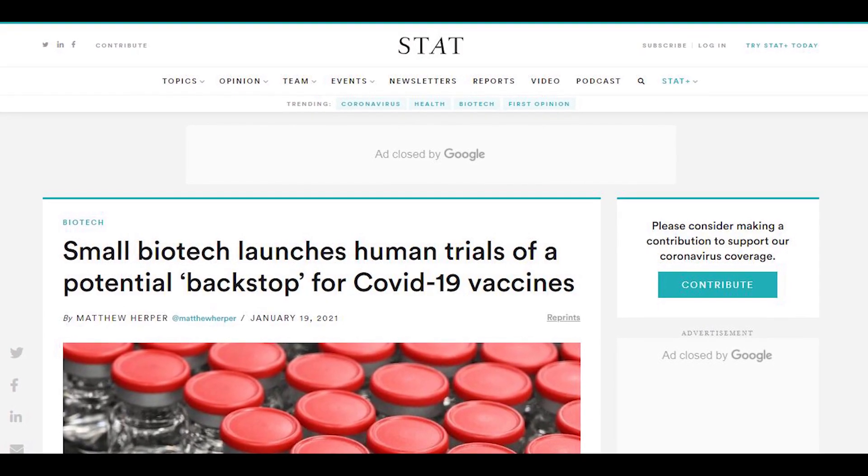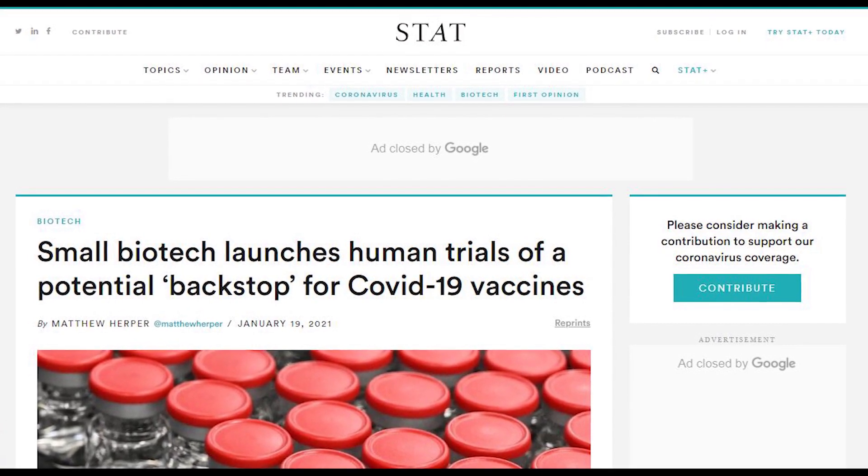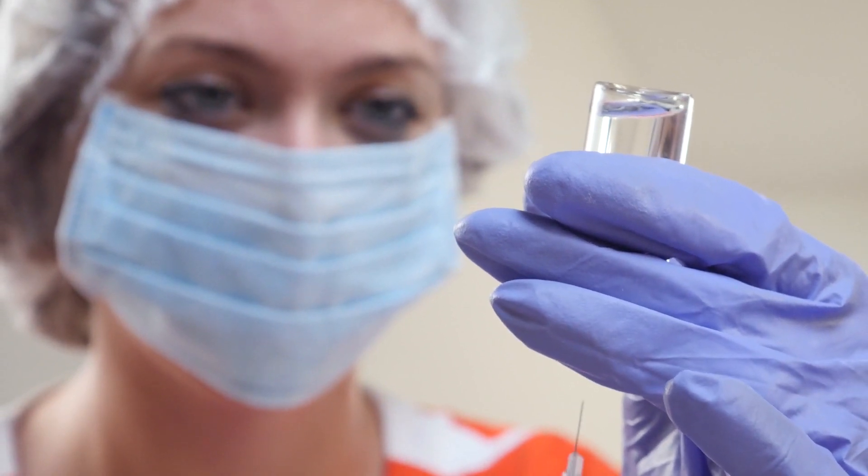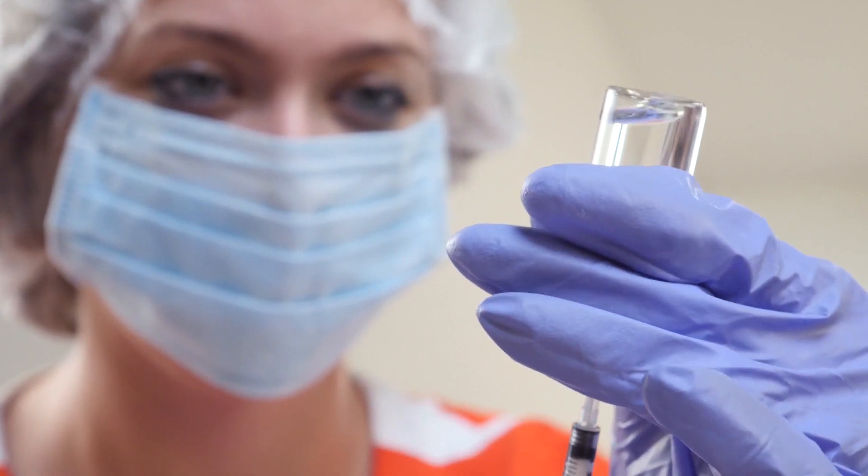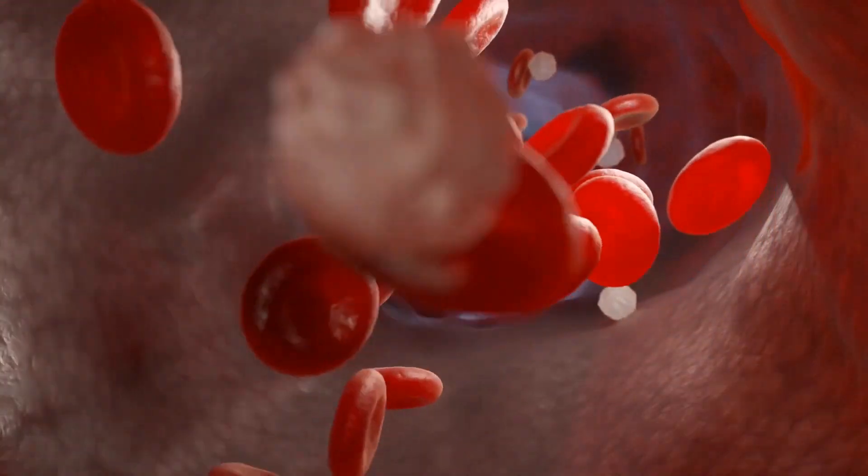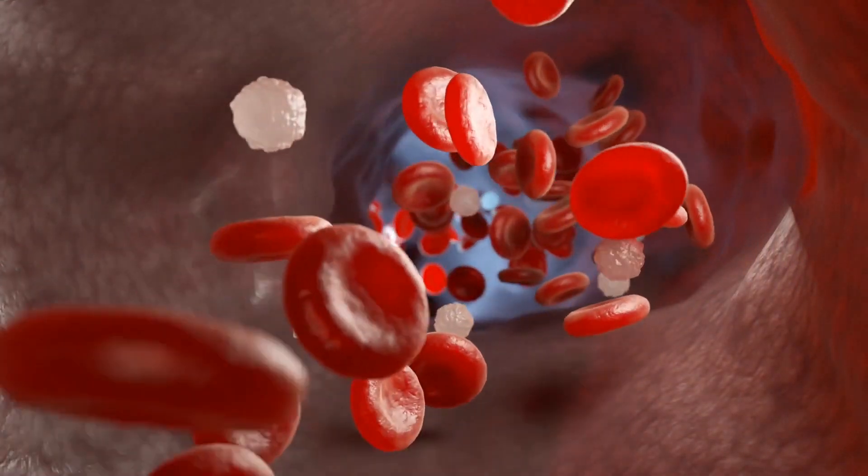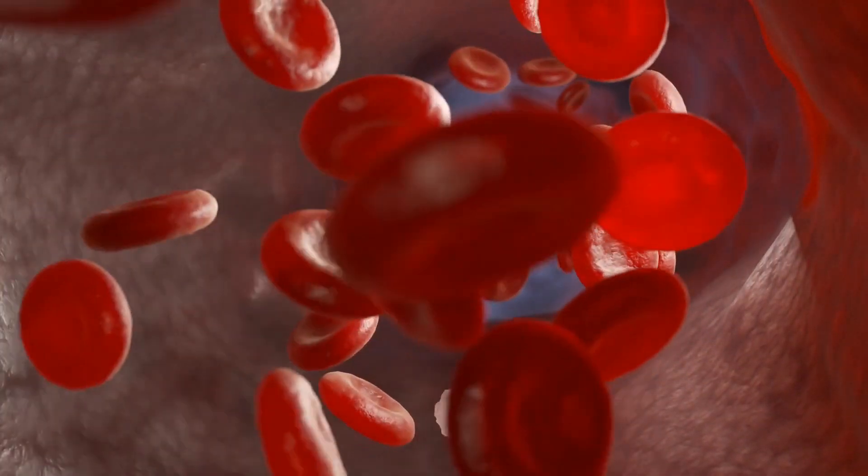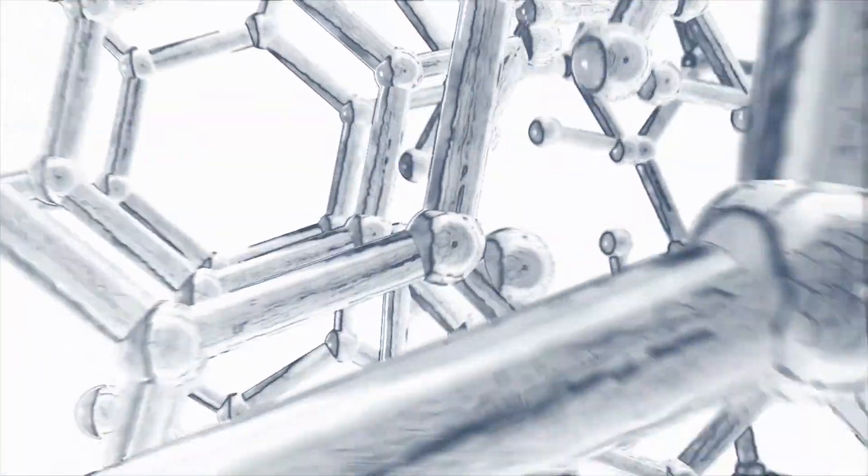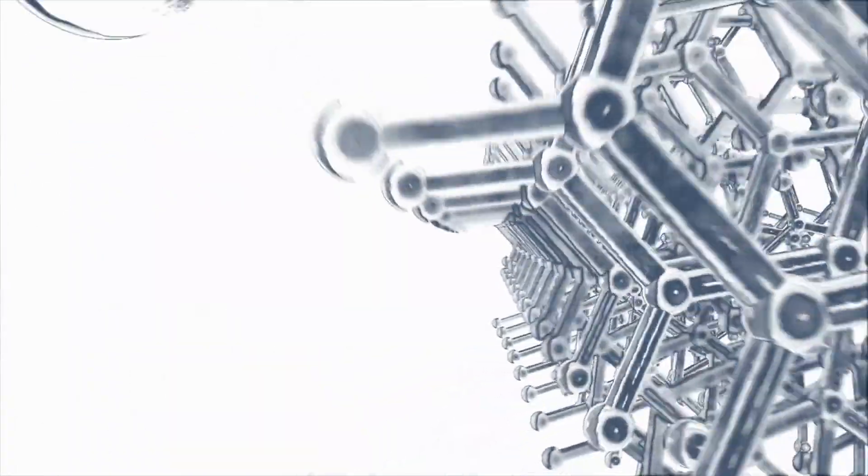According to STAT, Gristone's method combines two distinct vaccine types. The first uses vector-based technology via an adenovirus strain, like the J&J COVID-19 vaccine. The adenovirus delivers a gene into human cells, which will later produce proteins the immune system can detect and analyze. The second type uses mRNA technology similarly found in the Pfizer-BioNTech and Moderna vaccines.